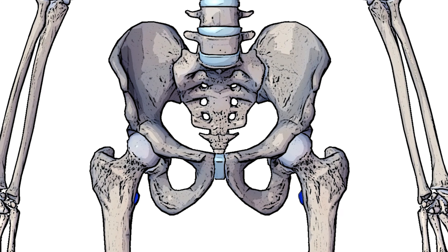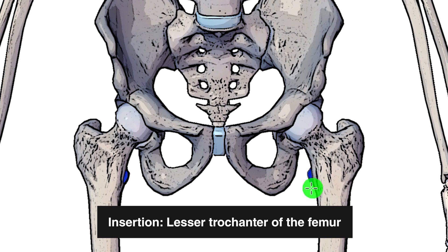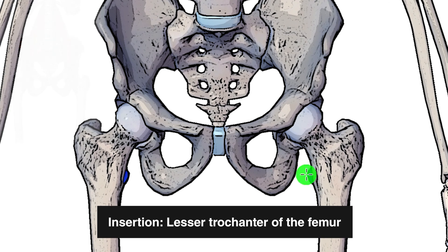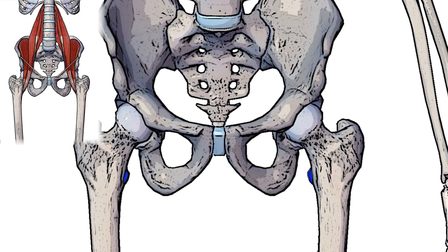Moving on to the insertion. You might have already guessed where that is based on my introduction. I've got it highlighted here in blue, which is on the lesser trochanter of the femur. It's going to be that shared tendon of the iliacus and the psoas major muscle as those fibres merge together and connect onto the lesser trochanter.